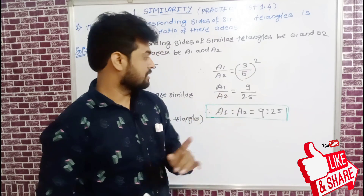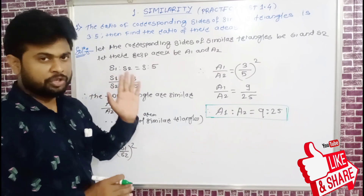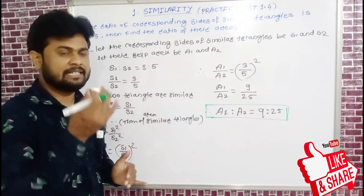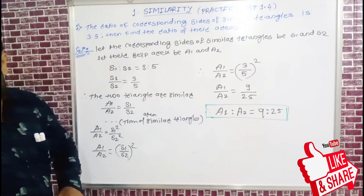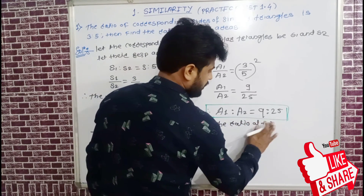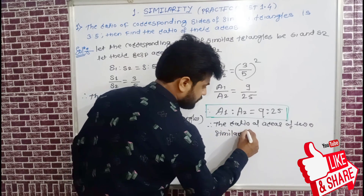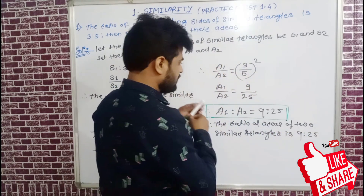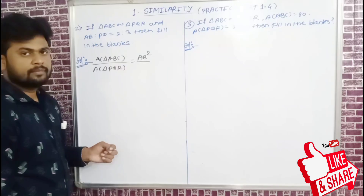So a1 upon a2 equal to 9 ratio 25. s1 and s2 denote the sides of the first and second triangles, and a1 and a2 denote their areas. Therefore the ratio of areas of the two similar triangles is 9 ratio 25.